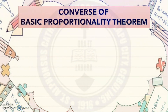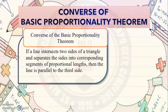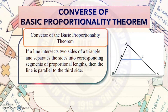The converse of the Basic Proportionality Theorem states that if a line intersects two sides of a triangle and separates the sides into corresponding segments of proportional lengths, then the line is parallel to the third side. Given triangle ABC with segment DE,